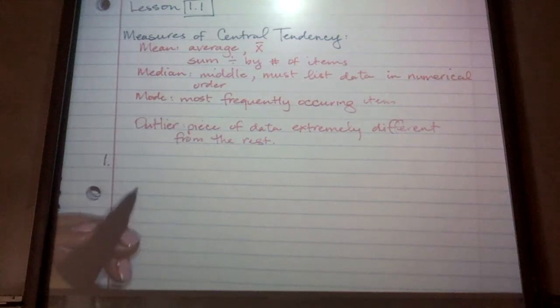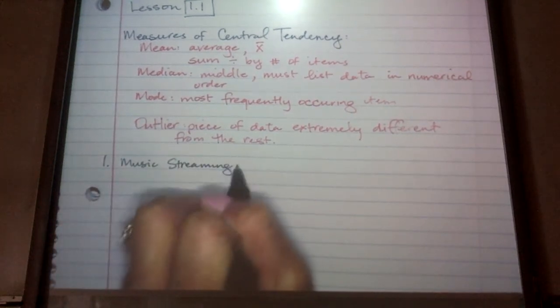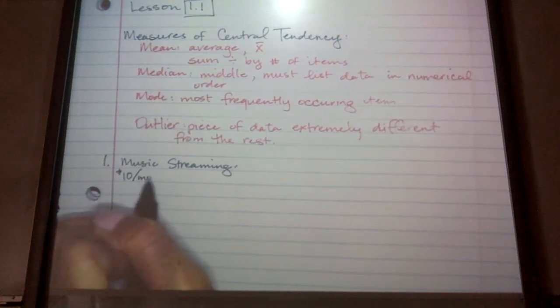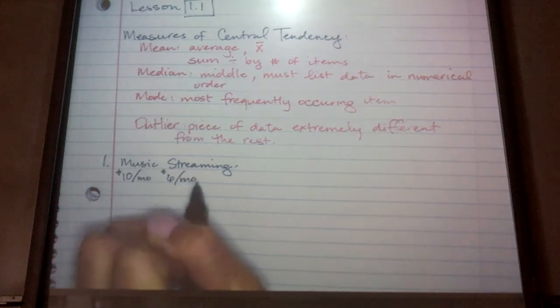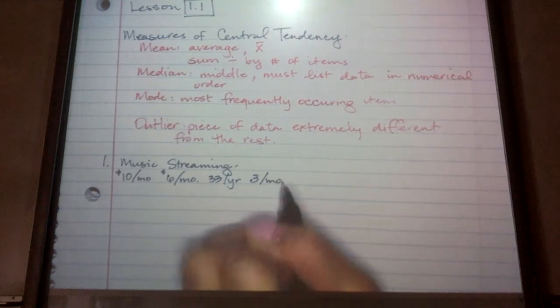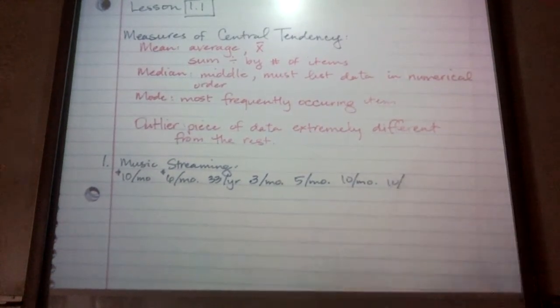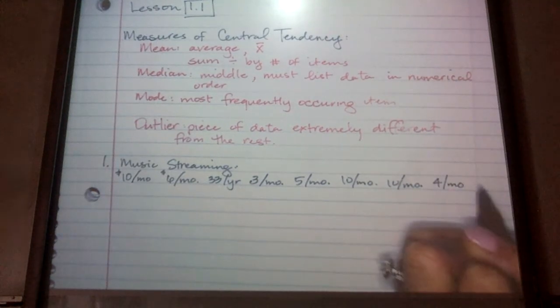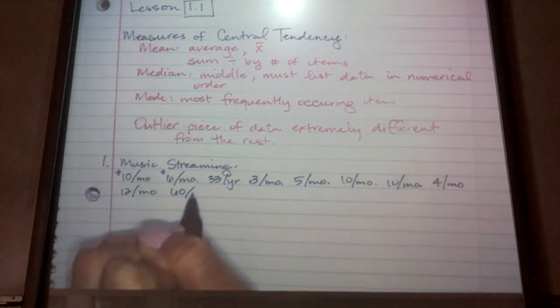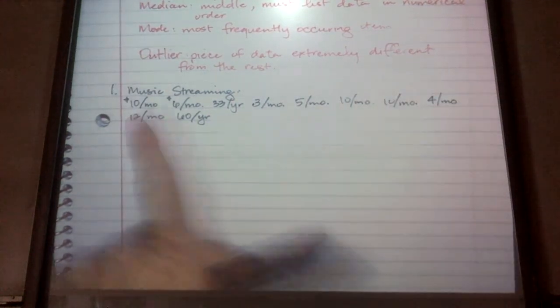I'm going to go ahead and do an example with you of mean, median, mode, just in case you've forgotten. So I'm just going to give you the data. I'm going to say this is a discretionary expense. Let's say this is music streaming services. So, and here's our data. I'm going to list it $10 per month is one, $6 per month is the other, $33 per year is another, $3 per month, $5 per month, $10 per month, another $10. So, $3 per month is $10 per year. All of these have dollar signs, I'm just being lazy. So there's our data, we should have 1, 2, 3, 4, 5, 6, 7, 8, 9, 10 pieces of data.